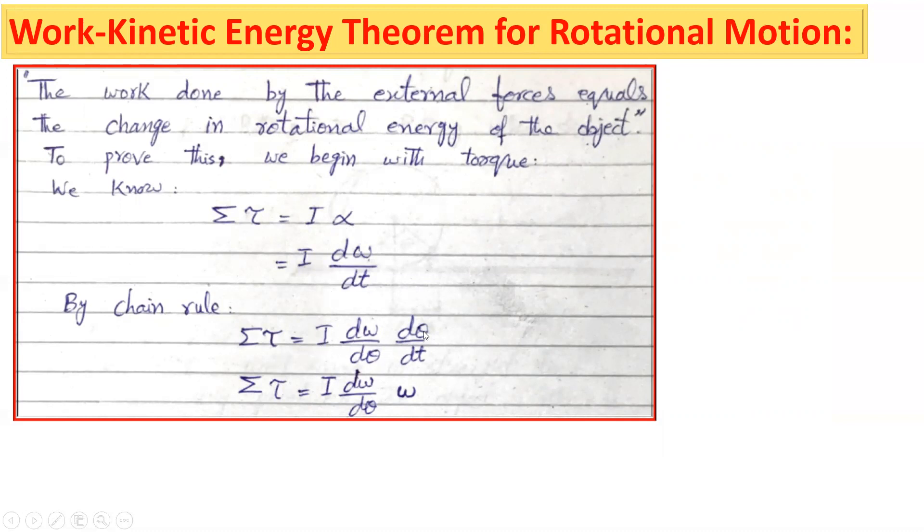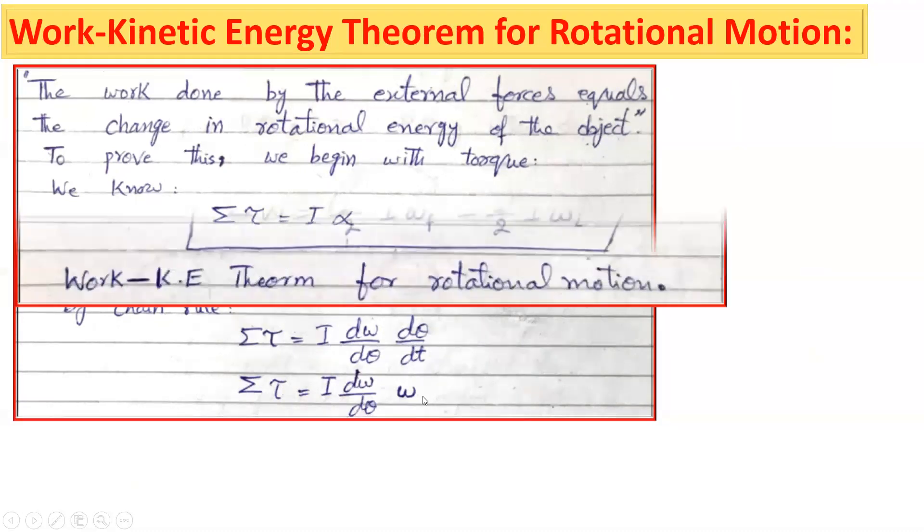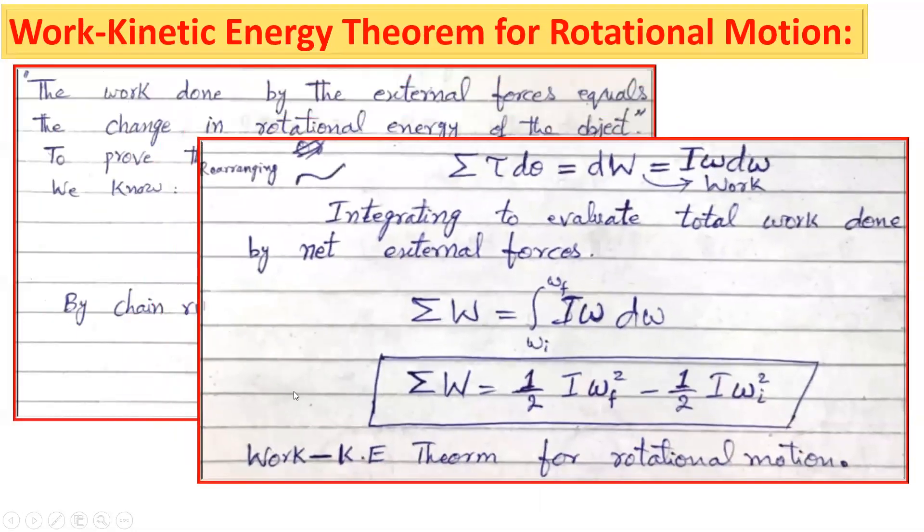This equals I times d omega over d theta multiplied by d theta, which is I d omega multiplied by omega. Integrating to evaluate total work done by net external forces, summation W equals...